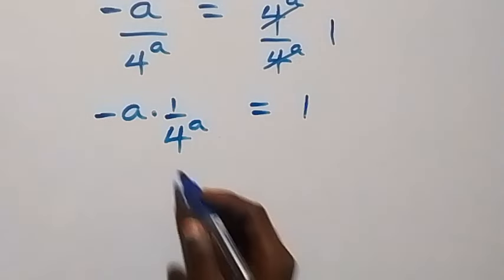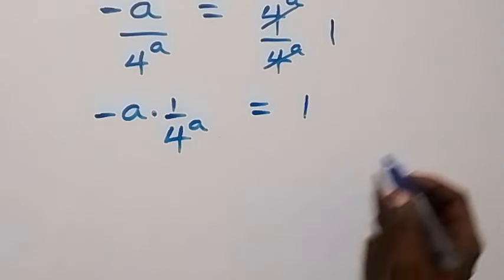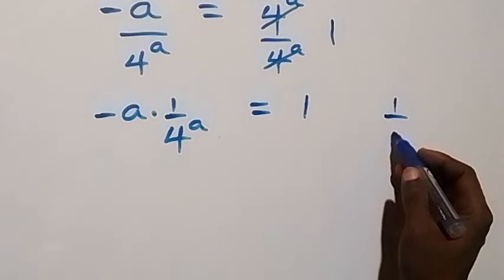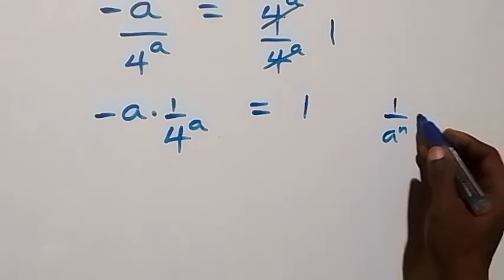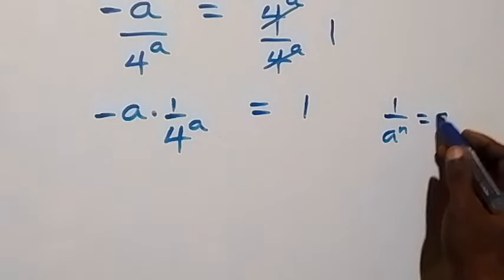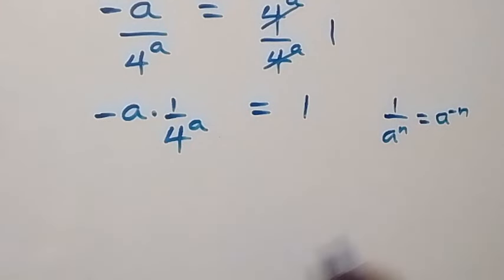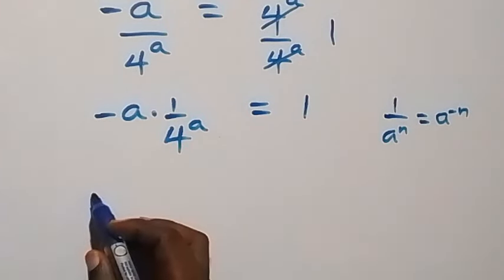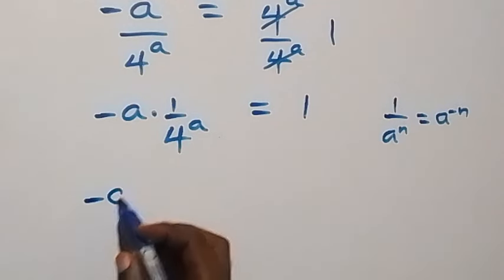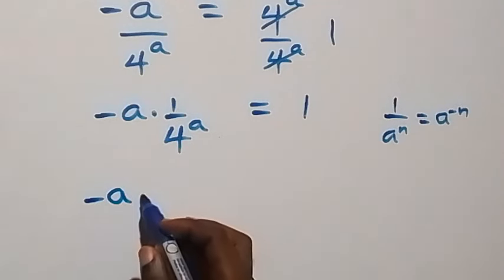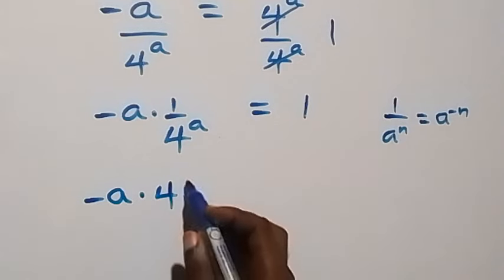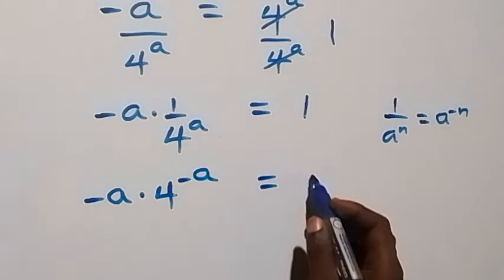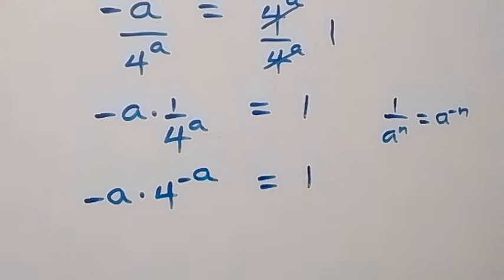And also, applying the law of indices: when we have 1 over a raised to power n, this is the same thing as a raised to power minus n. So here, we can write this as minus a times 4 raised to power minus a, now equals to 1.